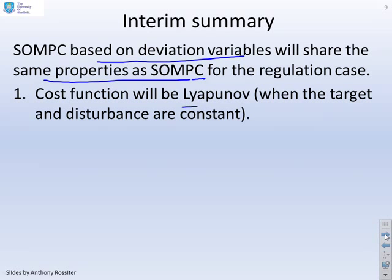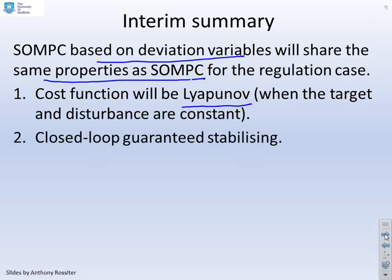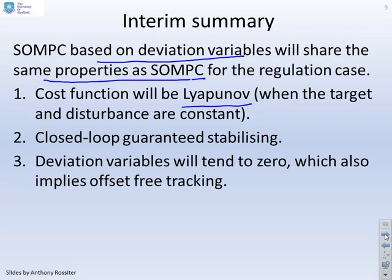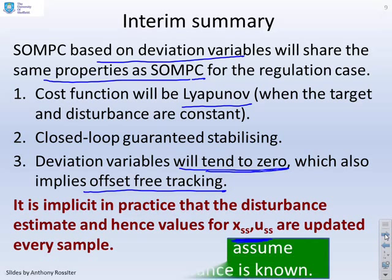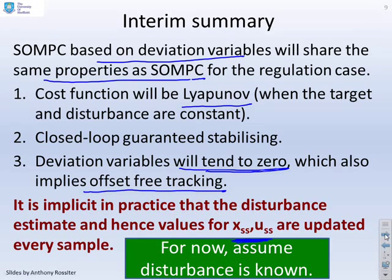It's implicit in practice that the disturbance estimate and hence the values for X_SS and U_SS are updated every sample, because the disturbance and target may not be constant in practice. For the examples in this video, we're going to assume the disturbance is known, but later videos will change that assumption.